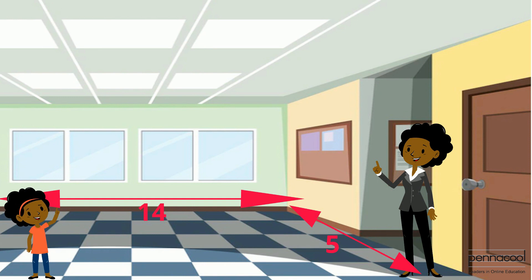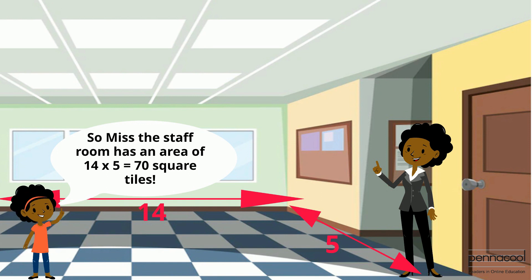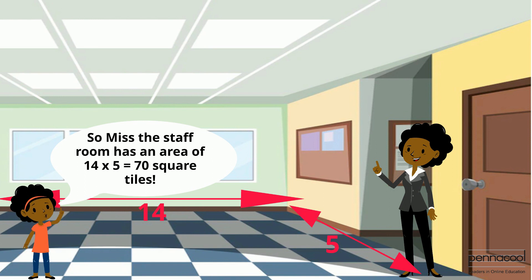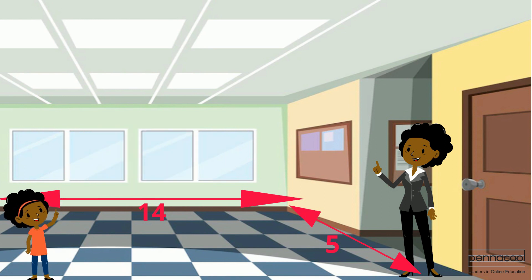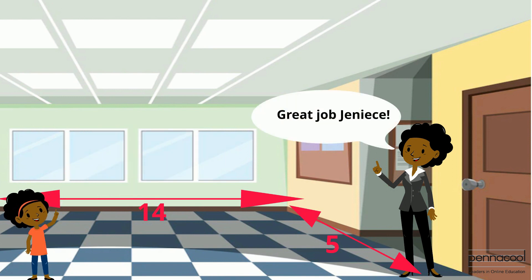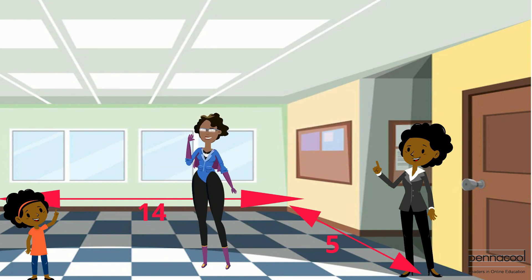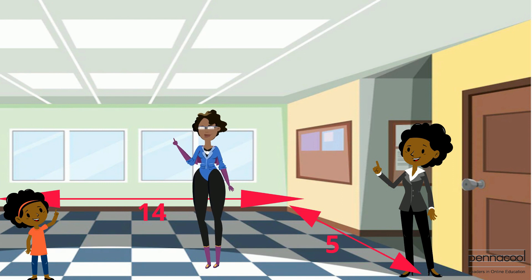Janice understands: 'Okay, Miss, that makes sense. So the staff room has an area of 14 multiplied by 5, which is equal to 70 square tiles.' Mrs. Rambali says, 'Great job, Janice!' She then encourages everyone to look around and see if there are any areas they can calculate by counting how many square units are within a given space in their environment.